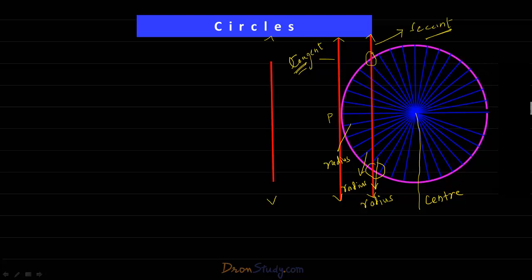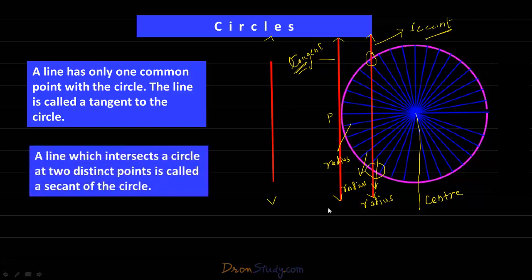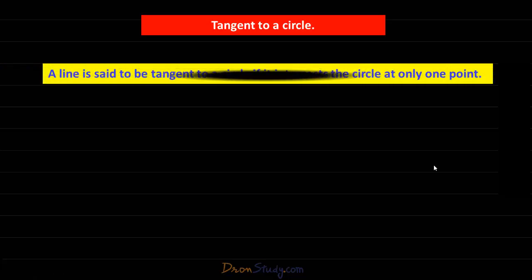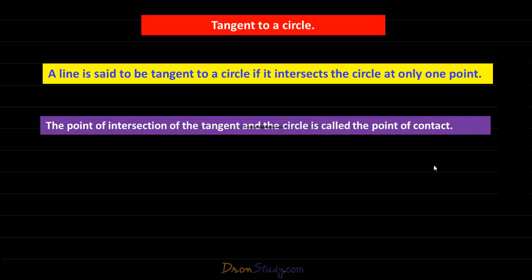To summarize: a line that has only one common point with the circle is called a tangent to the circle, and a line that intersects a circle at two distinct points is called a secant. A line is said to be a tangent to a circle if it intersects the circle at only one point, and this point of intersection is called the point of contact.